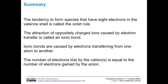In summary, the tendency to form species with 8 electrons in the valence shell is called the octet rule — a really important rule in chemistry that applies to covalent bonding as well. The attraction of oppositely charged ions is called an ionic bond, formed by electron transfer where some atoms give away electrons and others accept them. Always remember that the number of electrons lost by the cations equals the number of electrons gained by the anion or anions.